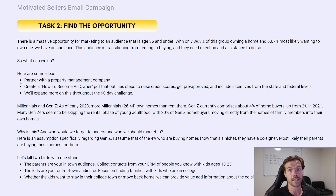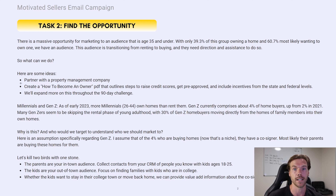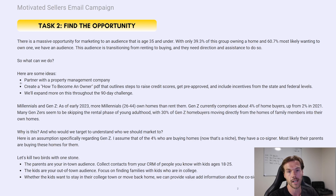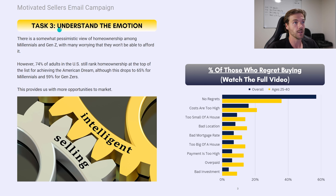Why not kill two birds with one stone? The parents are your in-town audience — search your CRM for anyone with children roughly 12 to 25 years old and market to the parents about buying a home and investment opportunities. Those kids will be your out-of-town audience. For example, if you're in Seattle and kids go to UW but their parents are out of state, those graduates looking to stay in Seattle become a niche: recent graduates getting jobs and buying homes in their college town. You can market to both the kids and the parents.